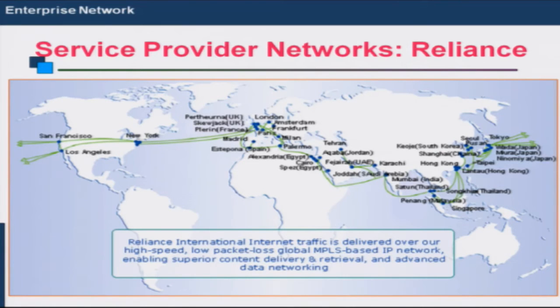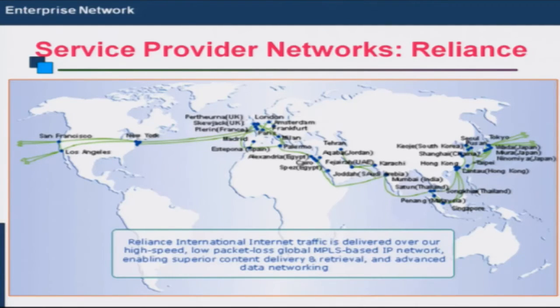National ISPs have a fiber optic network across a country and interconnect at multiple points to other national ISPs. The point of interconnection between national ISPs is also called an internet exchange. These national ISPs also interconnect to international ISPs which span multiple countries. This is how a very large global network is formed — by interconnecting national ISPs in different countries and international ISPs spanning multiple continents.